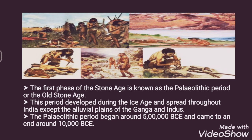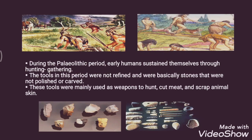During the Paleolithic period, early humans sustained themselves through hunting and gathering. They wandered from place to place in search of food and lived in temporary settlements such as caves and at times under trees. The tools of this period were not refined — they were basically unpolished stones. The tools were mainly flakes that had been broken off from bigger stones to serve their purpose.